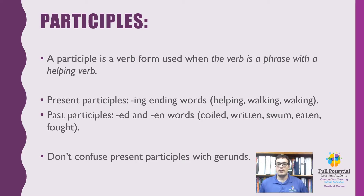We also have past participles with -ed and -en endings — coiled, written, and pushed, etc. As a side note, be sure not to confuse participles that are present with gerunds. All participles are adjectives or verb descriptors, while gerunds act as nouns in a sentence. Make sure you note which participle is which and keep them in mind as we study ahead.